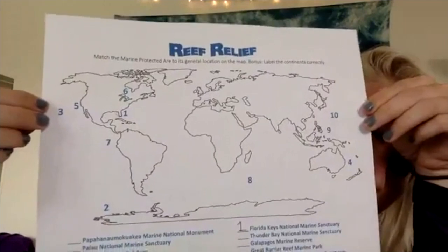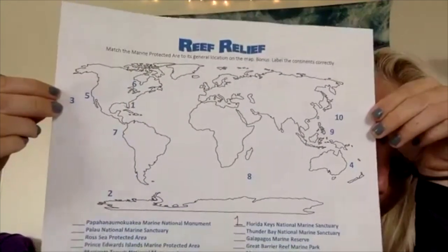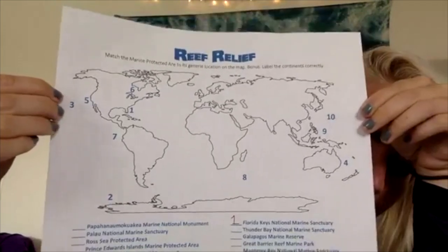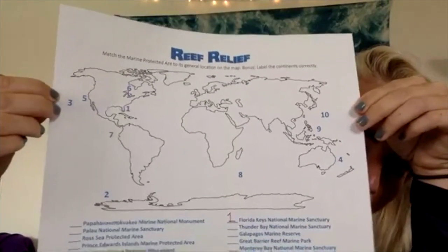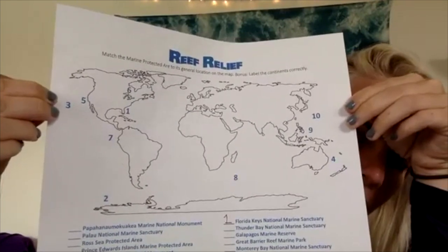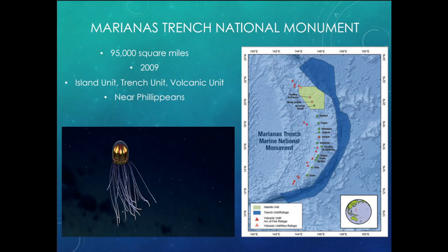Then we have Mariana's Trench National Monument — you've learned about Mariana's Trench before. It's near the Philippines in the Pacific Ocean, north of Palau. It's 95 square miles and was created in 2009. It's actually controlled by the United States and has three units: the island unit, the trench unit, and the volcanic unit.